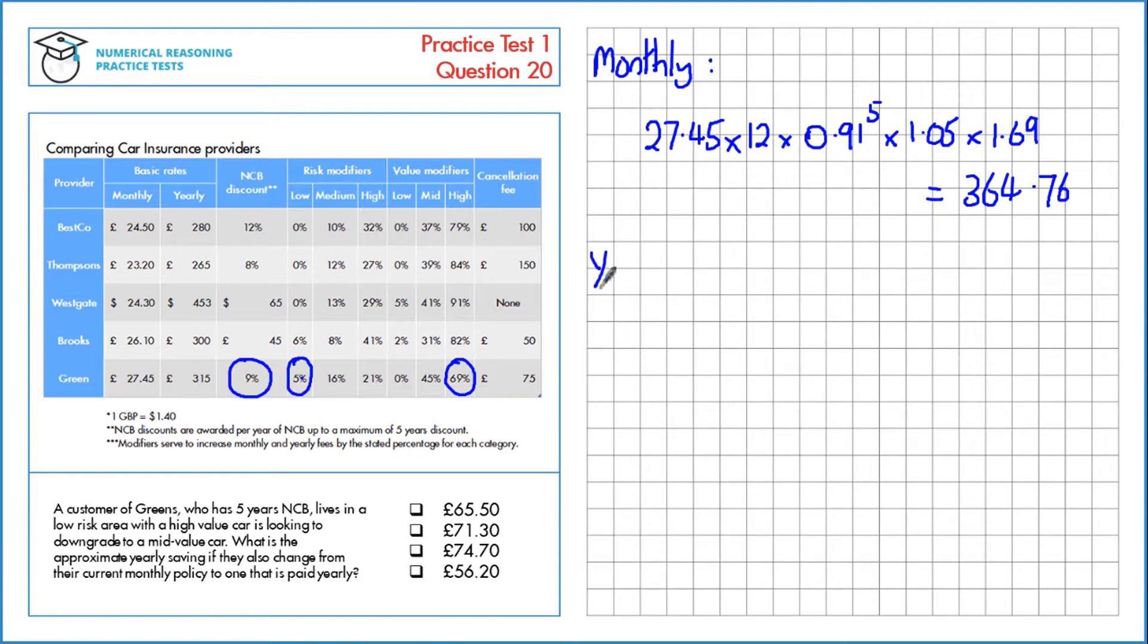Now let's look at the change to yearly and the change into a mid value car. So the yearly price is £315, the no claims bonus stays the same and the area stays the same as well so that's 1.05.